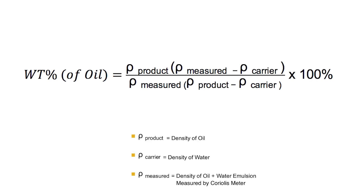Two: the Coriolis flow meter will report incorrect net oil flow. Let us see why entrained gas in an oil-water emulsion will cause incorrect net oil flow to be reported.